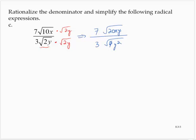Let's be a little bit careful here. That 20 is 4 times 5. So I would have 7 times the square root of 4 times the square root of 5xy.